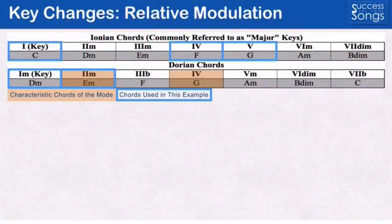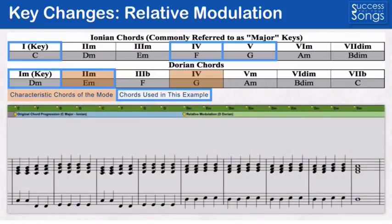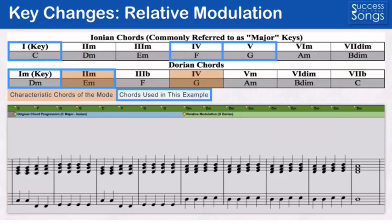In this type of key change you're going to be jumping from the key in one mode to a different mode that has the same chords as your original mode. In this first example we'll have chords that are C, F, G, and G which are in C Ionian. If we then switch to the D Dorian chords of D minor and E minor, we'd have made use of relative modulation because those chords appear in both C Ionian and D Dorian keys.